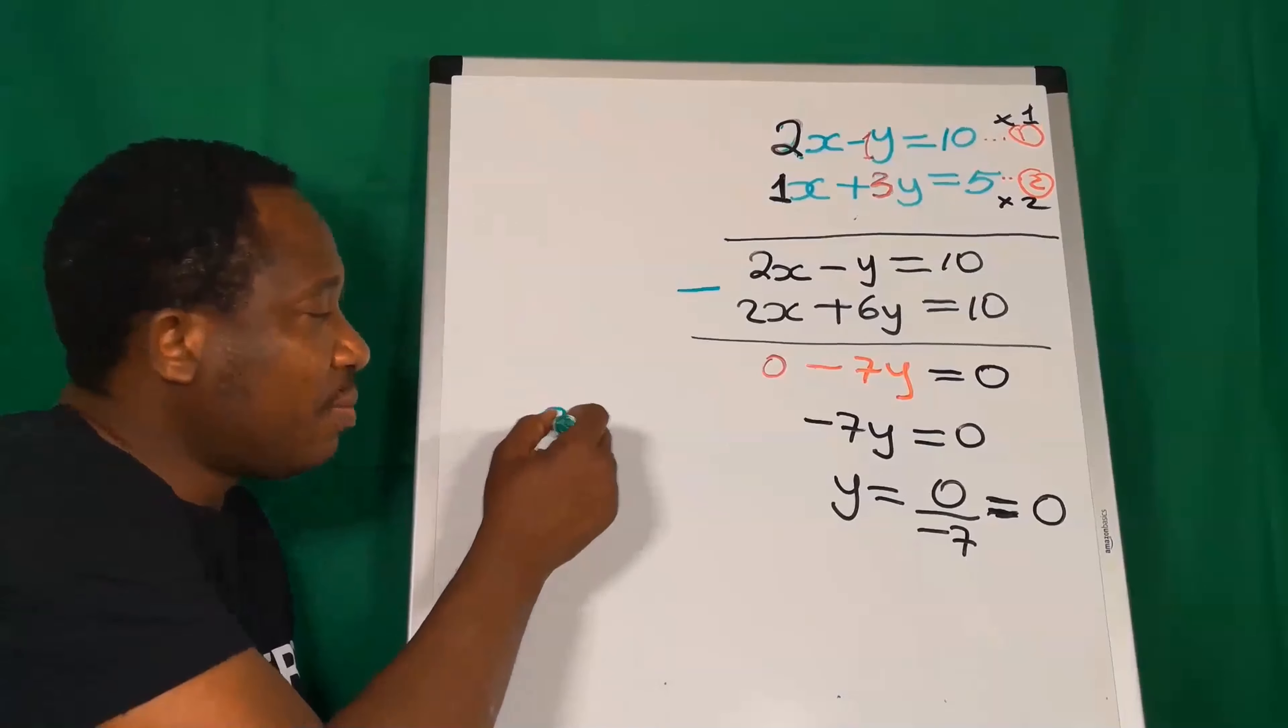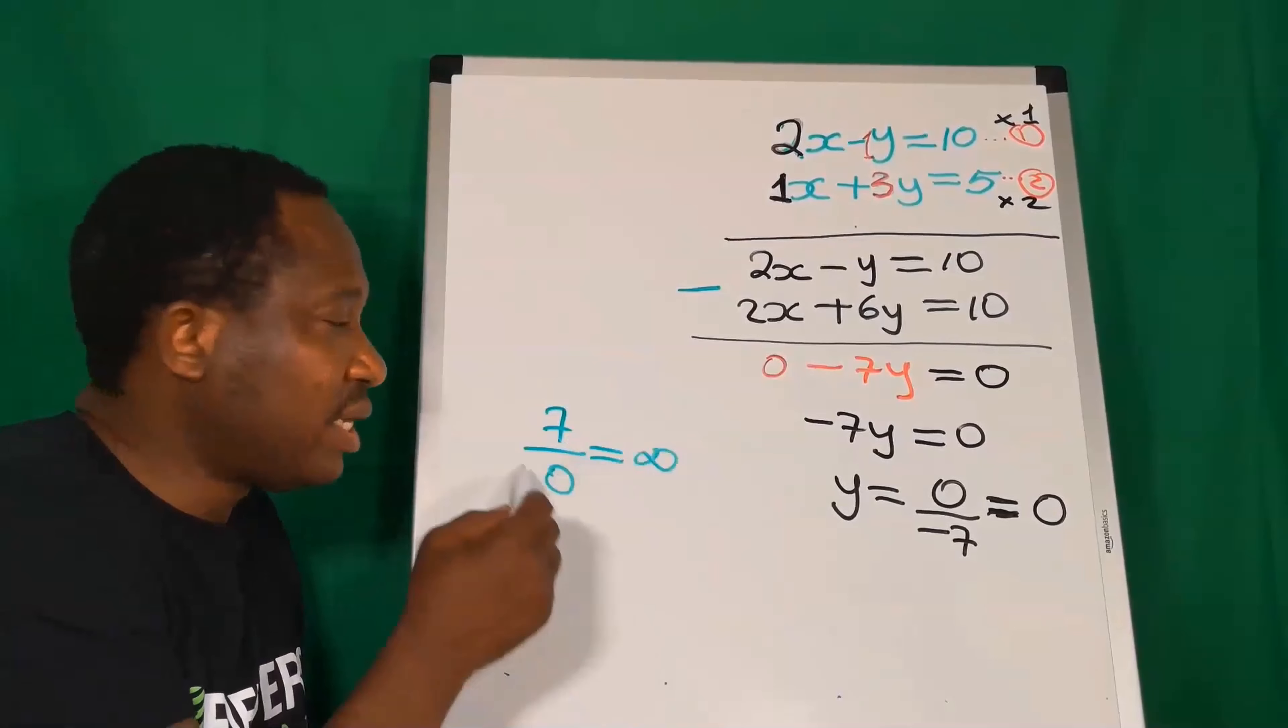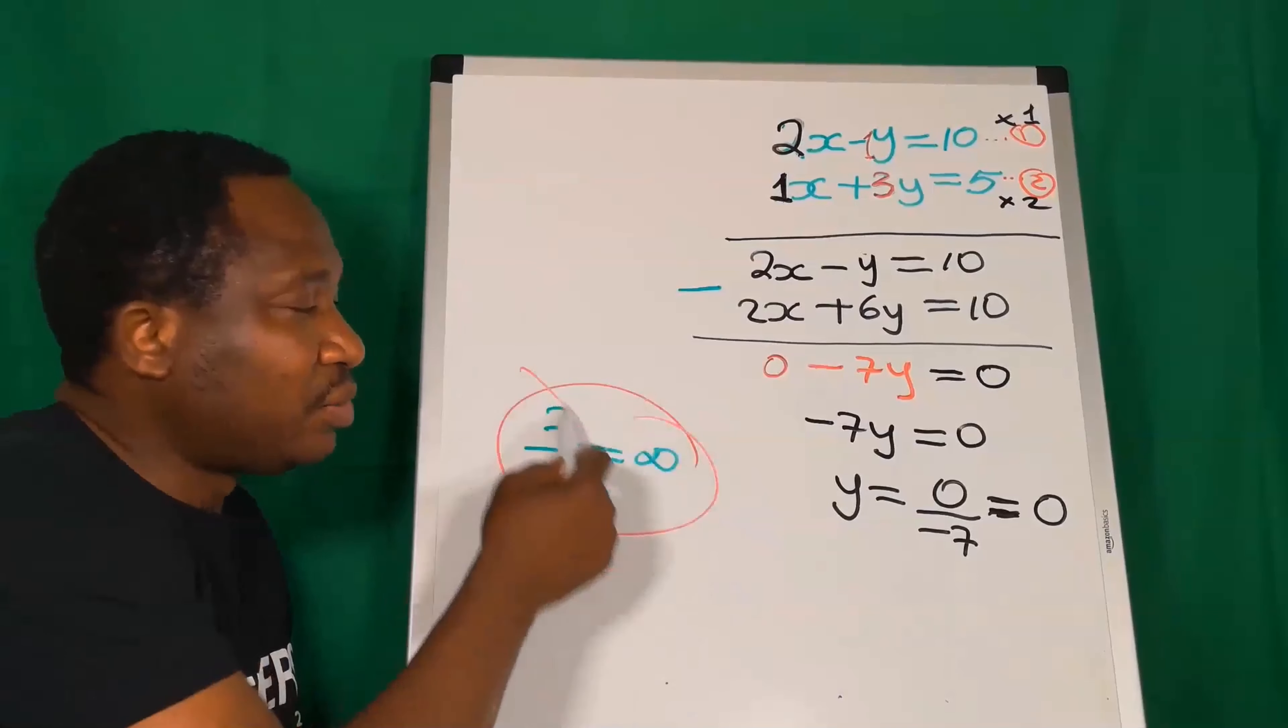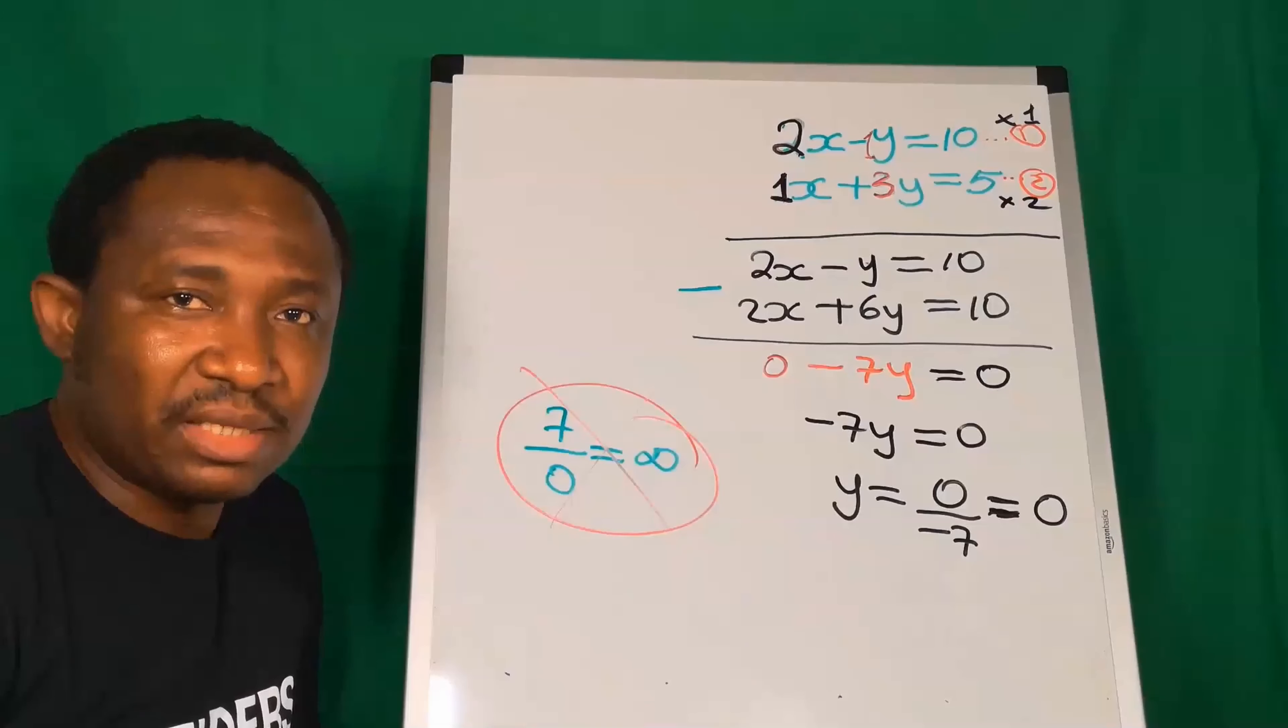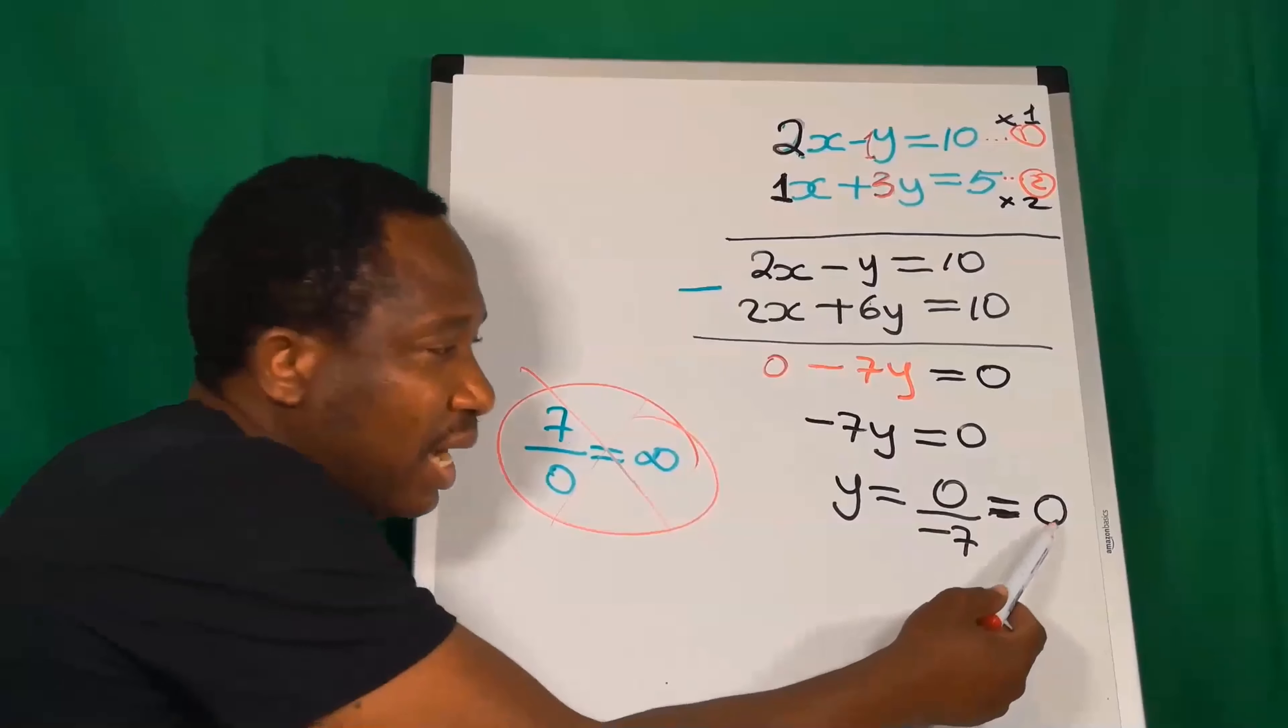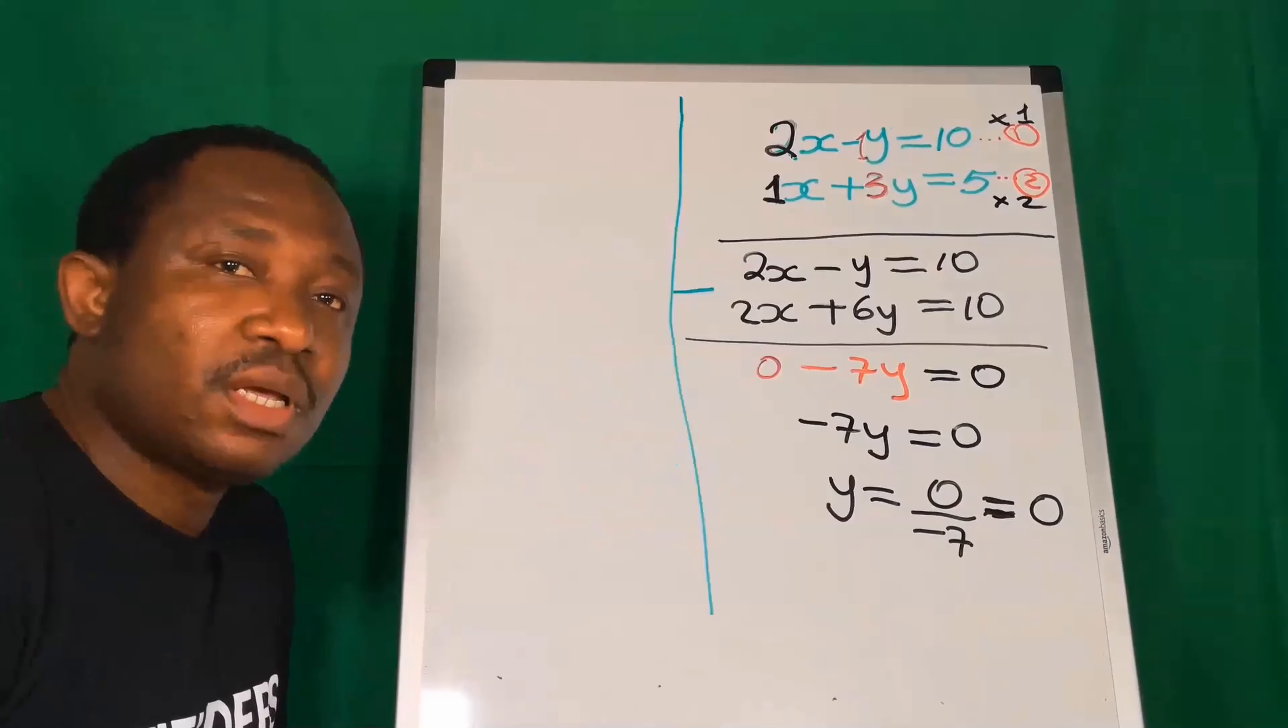Also, in equation 1, the coefficient of y is 1, while the coefficient of y in equation 2 is 3. They are not the same. What are you going to do in such a situation? You can decide to use the coefficient of x or the coefficient of y.